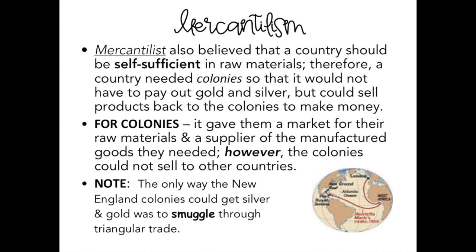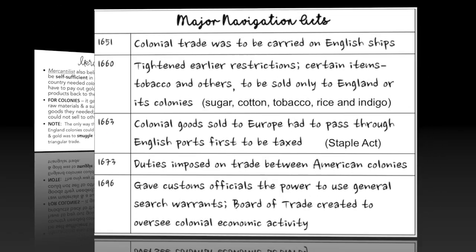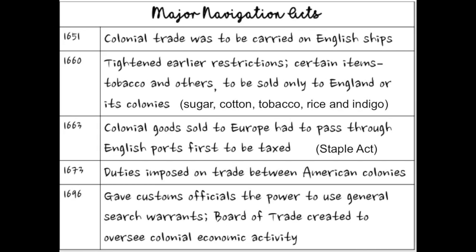In the American colonies, we have tobacco, rice, indigo, wheat, and other cash crops. We can only sell those cash crops to England, even though other countries like France, the Netherlands, and Spain might be willing to buy those goods at a better price. The colonists don't necessarily want to abide by what Great Britain wants them to do. Great Britain is trying to make money from the colonies, and the colonies don't think this is fair — they want to be able to trade with other European countries.